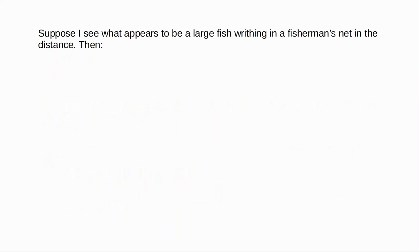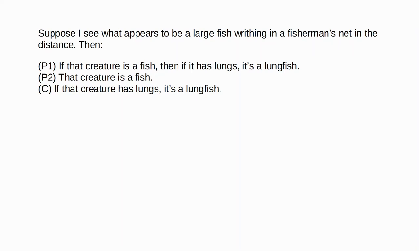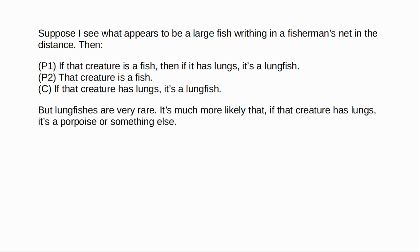Here's another example. Suppose I see what appears to be a large fish writhing in a fisherman's net in the distance. I accept premise one: if that creature is a fish, then if it has lungs, it's a lungfish — true just by definition. Premise two: that creature is a fish, which I believe on the basis of perception. Applying modus ponens yields the conclusion: if that creature has lungs, it's a lungfish. But I don't believe the conclusion — lungfishes are rare; it's much more likely that if the creature has lungs, it's a porpoise or something else. These arguments suggest that modus ponens is not universally reliable, even in cases of everyday reasoning. The failure occurs when we embed indicative conditionals into other conditionals.